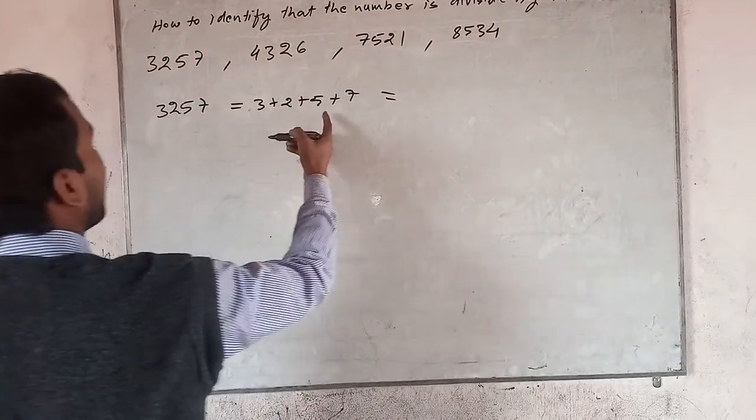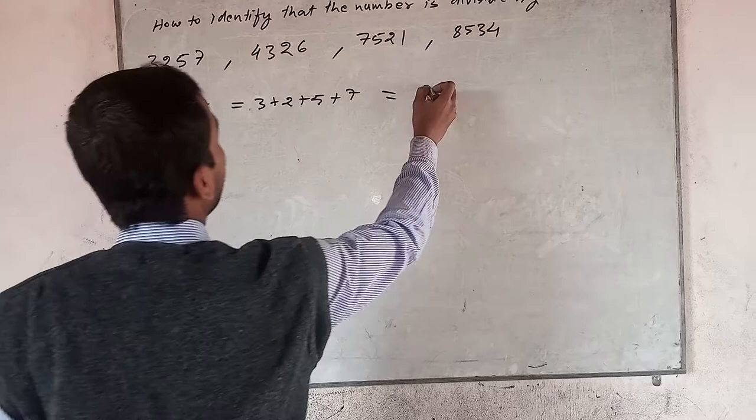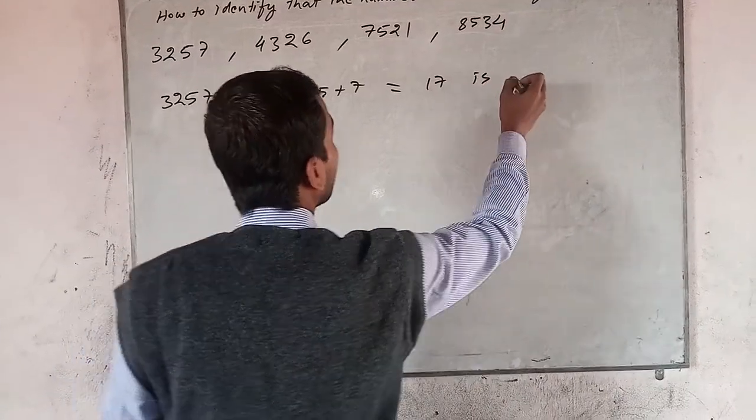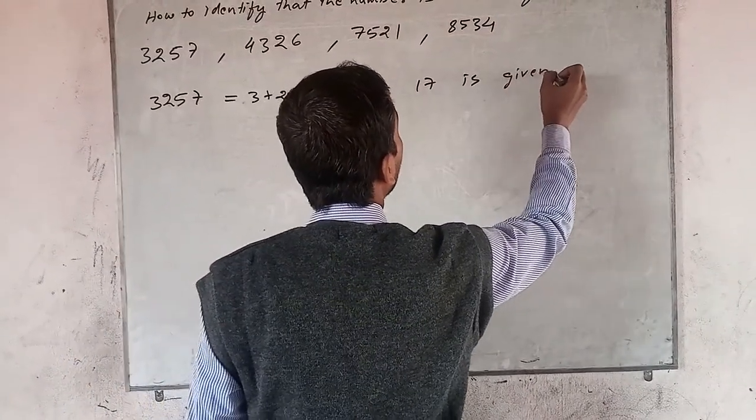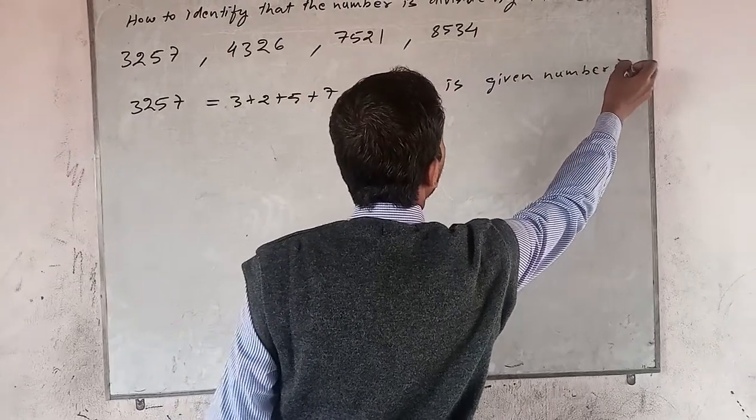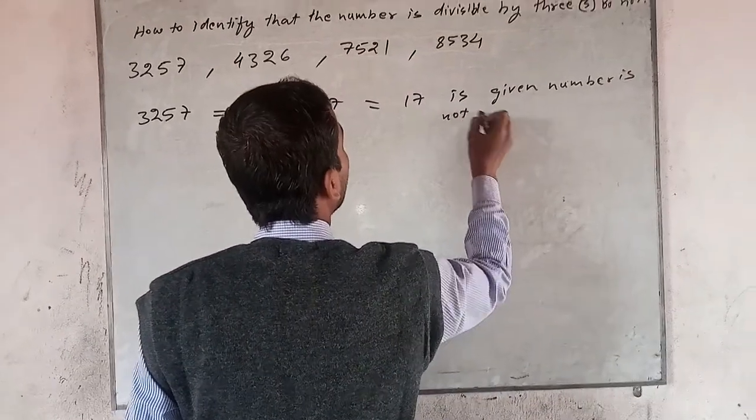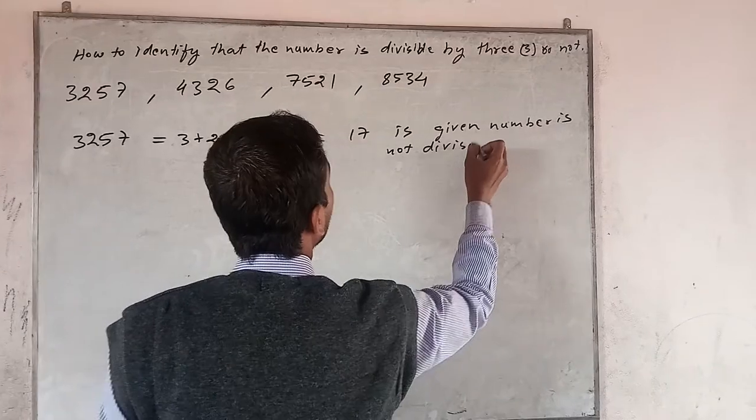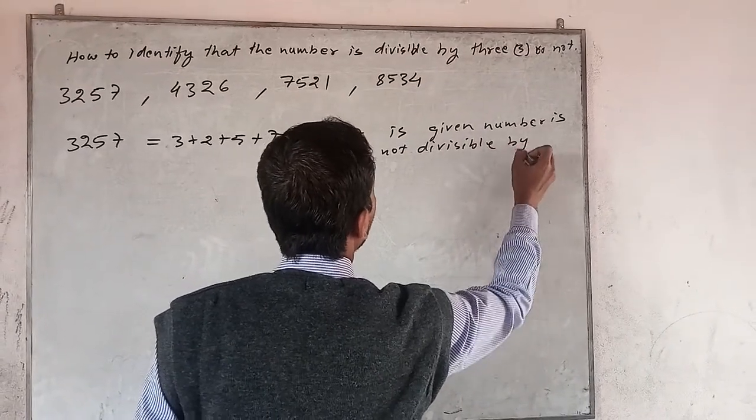5, 10, 17. This means the given number is not divisible by 3.